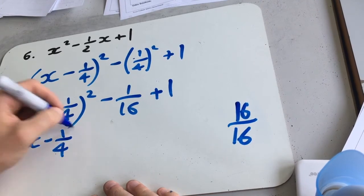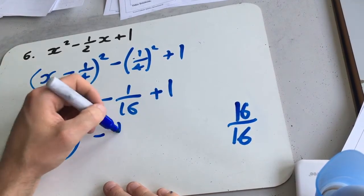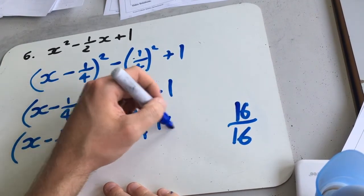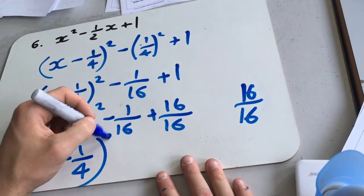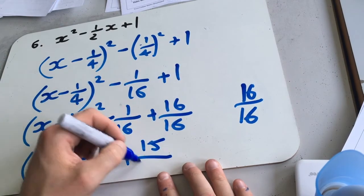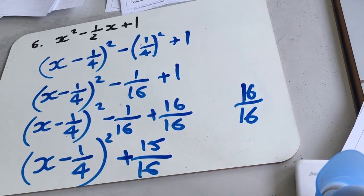So we get x minus a quarter squared minus 1 sixteenth plus 16 over 16. And the last step, x minus a quarter squared plus 15 out of 16. Cool.